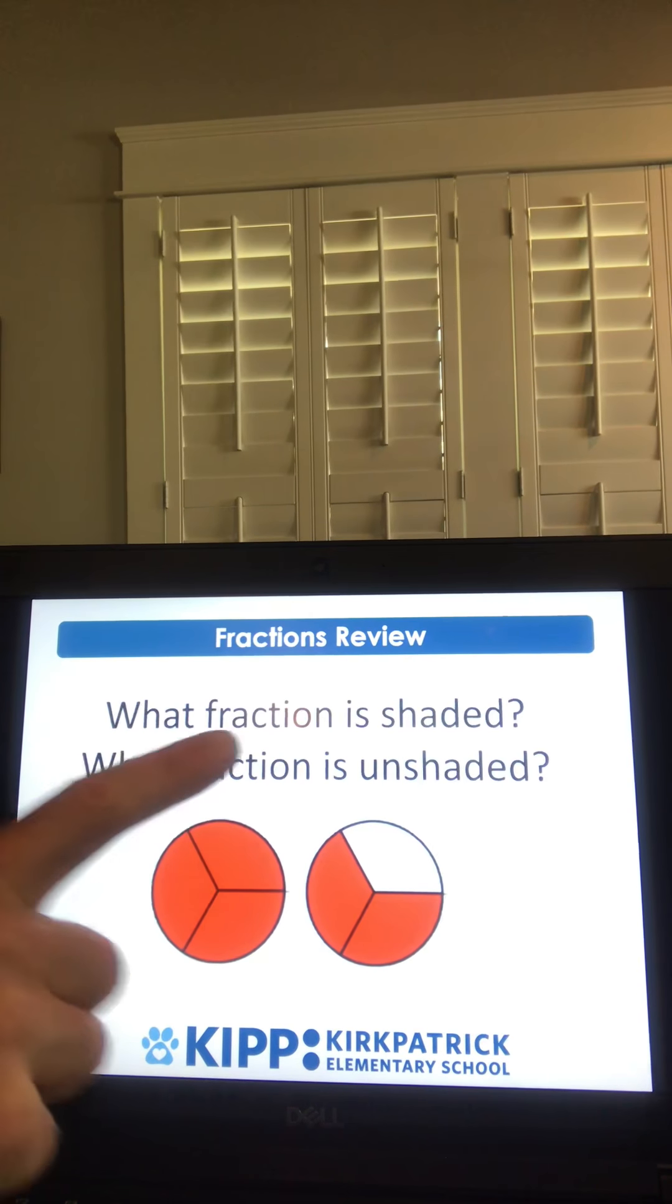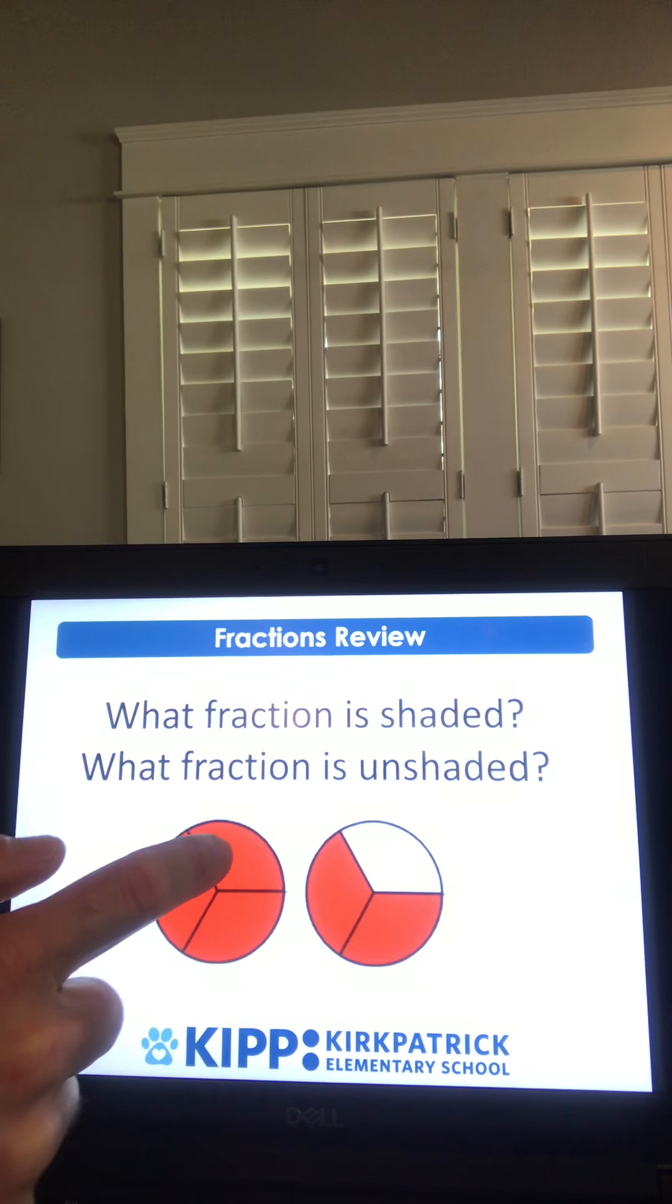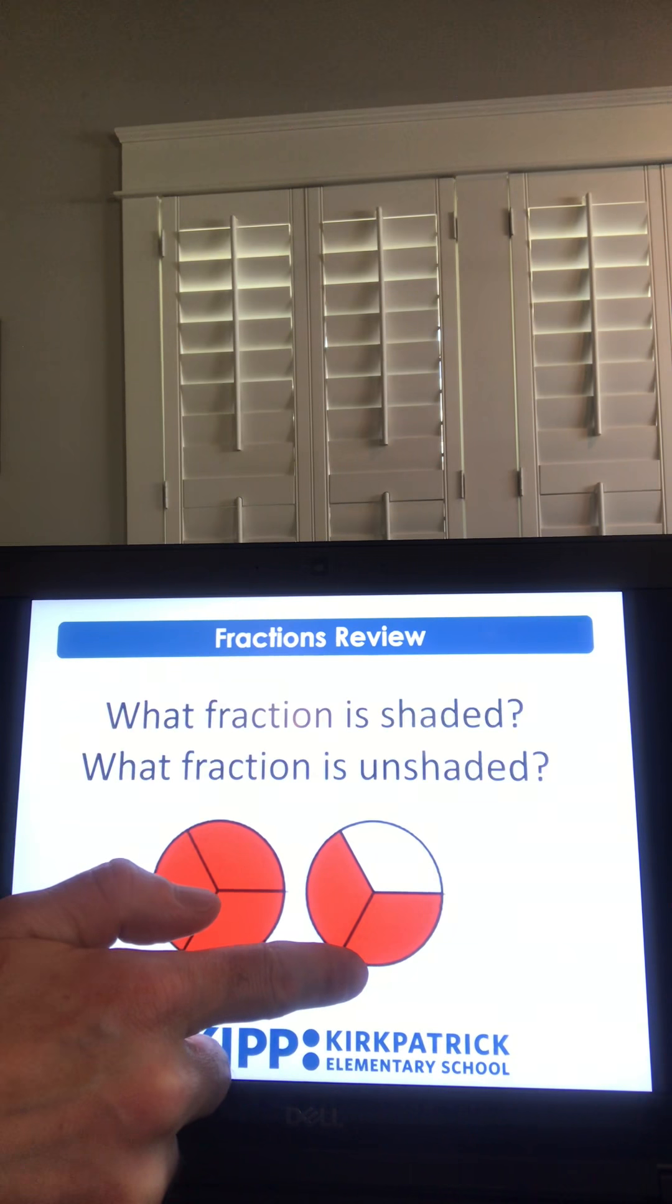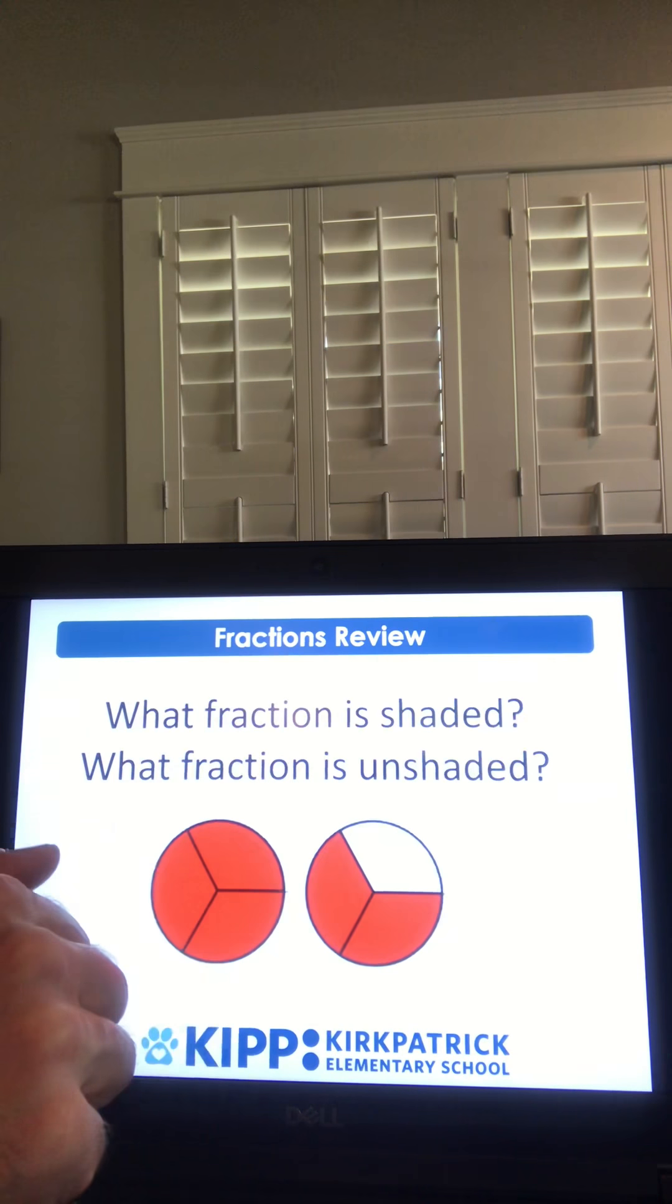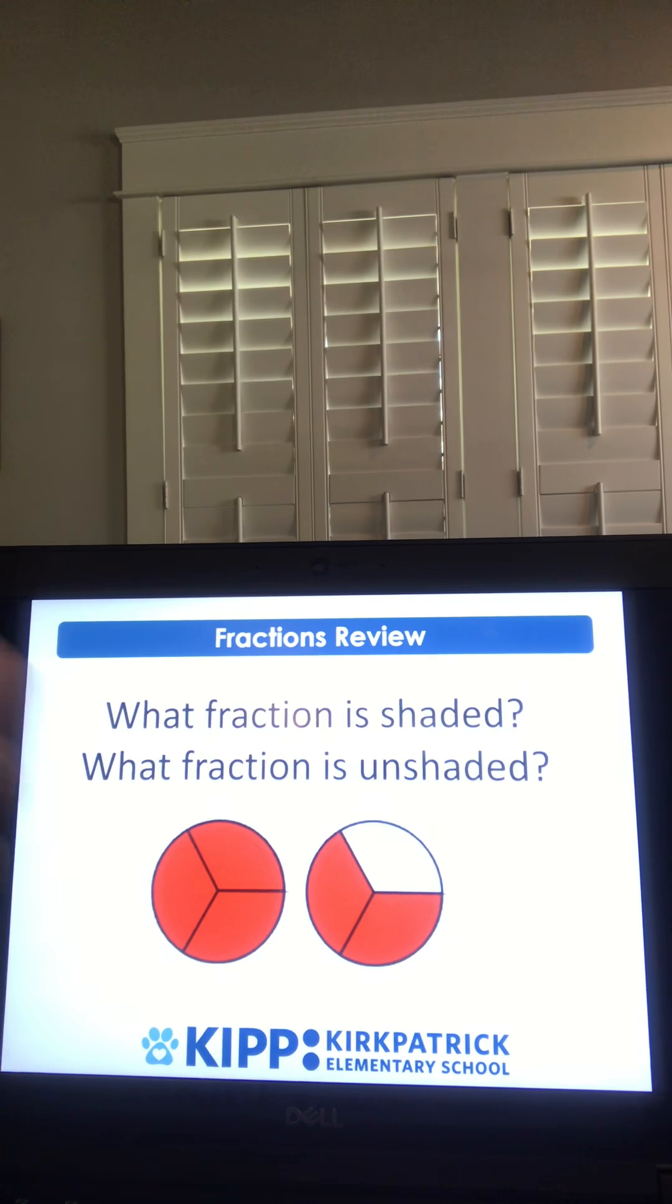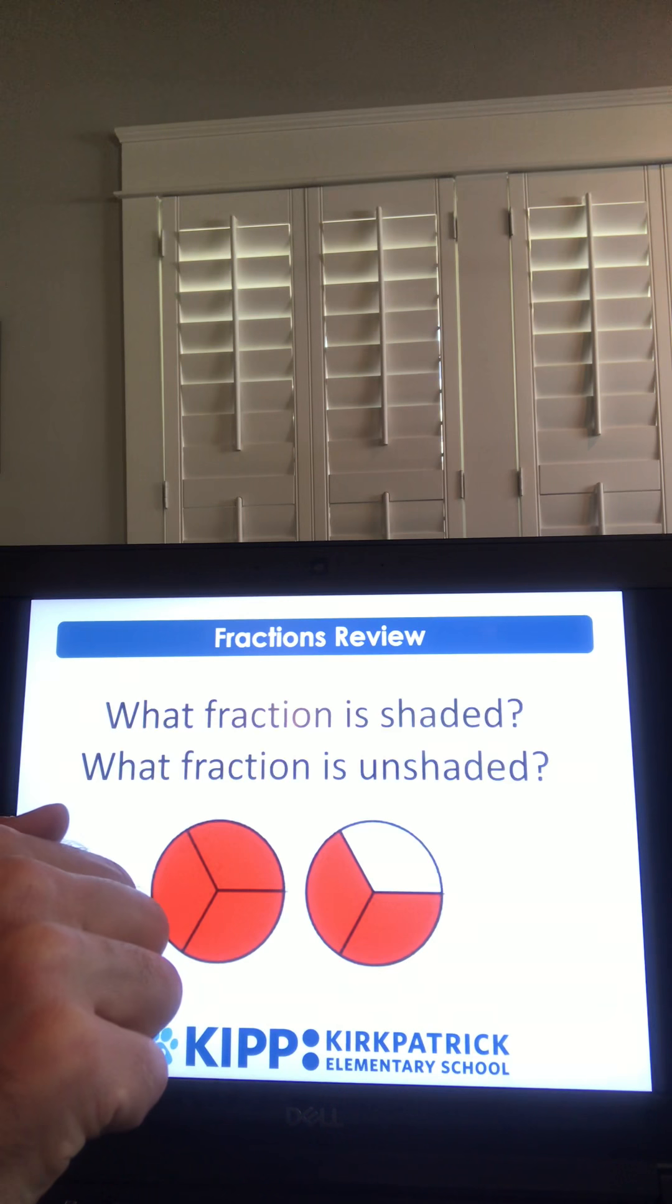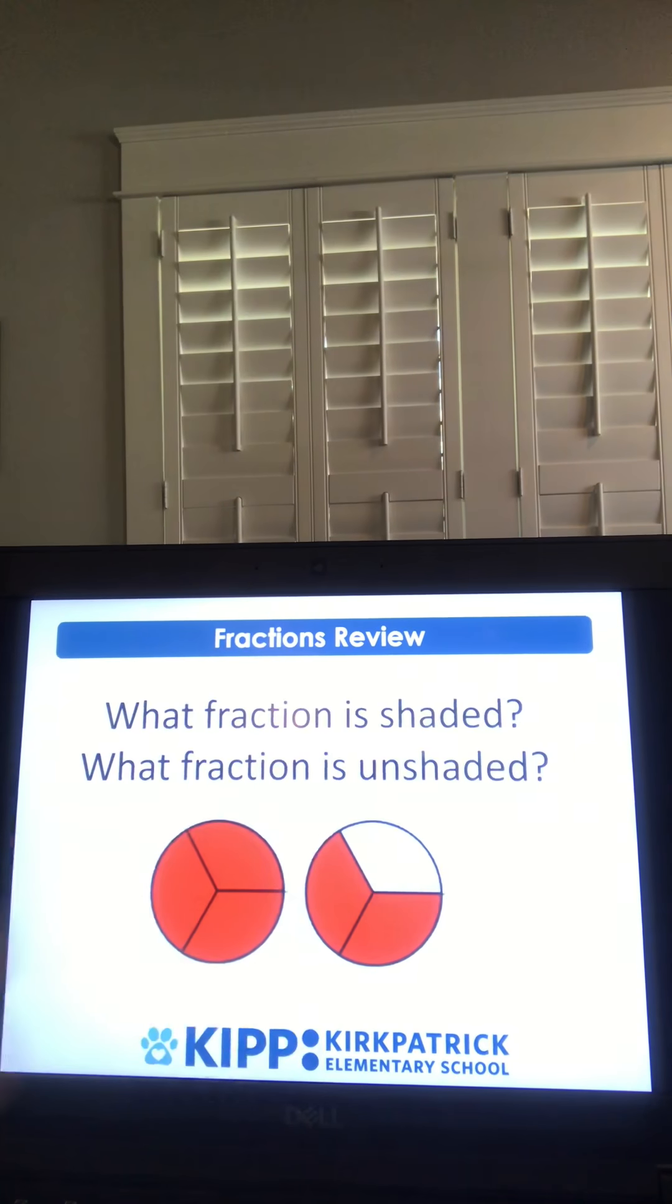So let's answer the shaded question first. What fraction is shaded? I see two circles, and each circle has three equal parts. So we're working with the fraction of thirds. Now what's tricky about this problem is we have two wholes instead of just one whole. So I have one, two, three, four, five, five-thirds, or five over three. Or you could say that one and two-thirds is shaded. What is unshaded? So that would be the part that's white still. That's just one-third, because it's one piece out of the three wholes. So one-third is unshaded.